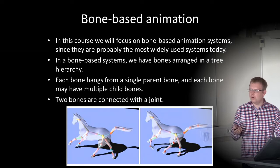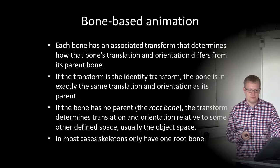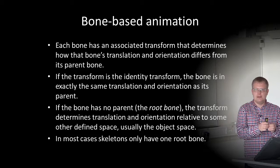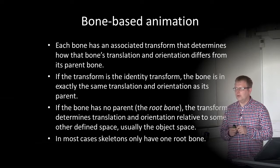This is an example of a skeleton for a horse. Each bone has an associated transform that determines the bone's translation — the position and orientation relative to its parent bone. So the relative distance and relative orientation from a parent bone. If a transform is the identity transform, the bone has exactly the same translation and orientation as its parent.